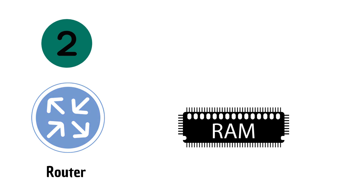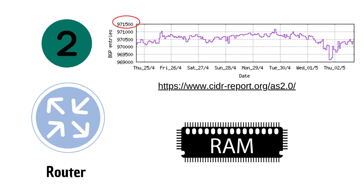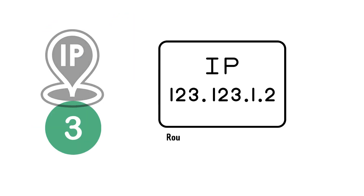The second thing we need is the router. Ensure you have enough memory, as BGP tables can be large databases that store a complete global BGP routing table from one BGP peer. It is best to have a minimum of 512 megabytes or one gigabyte of RAM in the router. There are almost 1 million entries in global BGP routing, and it keeps growing daily.